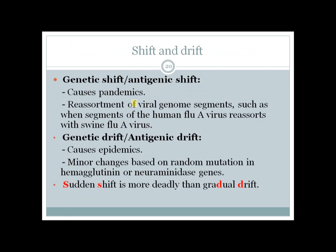Influenza viruses undergo two types of genetic change: Antigenic shift (big change) causes pandemics and occurs due to reassortment of viral genome segments — for example, segments of human flu virus reassorted with segments of swine flu virus, which was the cause of the 2009 swine flu pandemic. Antigenic drift (minor change) causes epidemics and is due to random mutations in the Hemagglutinin or Neuraminidase genes. Remember: sudden shift causes pandemics; gradual drift causes epidemics.